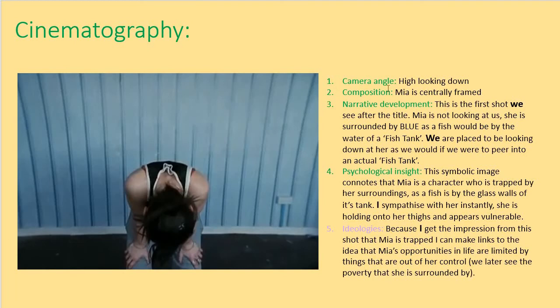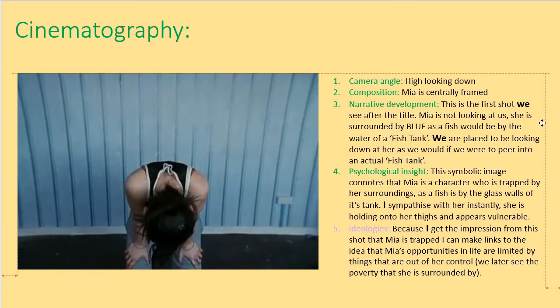Camera angle: it's a high angle looking down. Composition: Mia is centrally framed — she's in the centre of that shot. For narrative development: this is the first shot we see after the title — that black screen with 'Fish Tank' in the middle. Mia's not looking at us; she's surrounded by blue as a fish would be in the water of a fish tank. We are placed looking down at her as we would be peering into an actual fish tank. For psychological insight: this symbolic image connotes that Mia is a character who is trapped by her surroundings, as a fish is by the glass walls of its tank. Because of that, I sympathise with her instantly — she's holding onto her thighs and appears vulnerable.